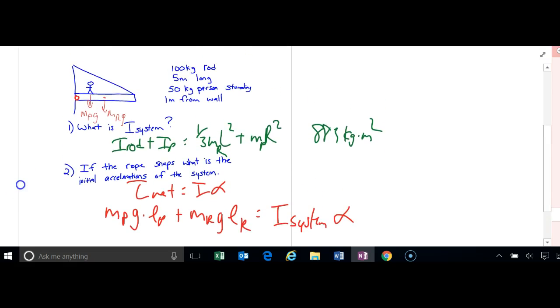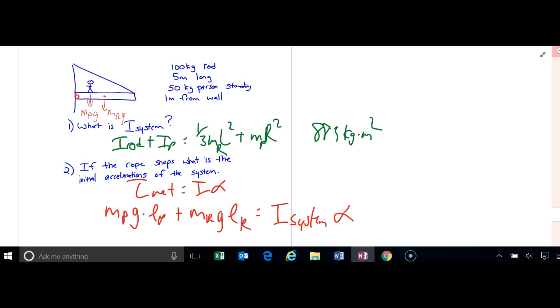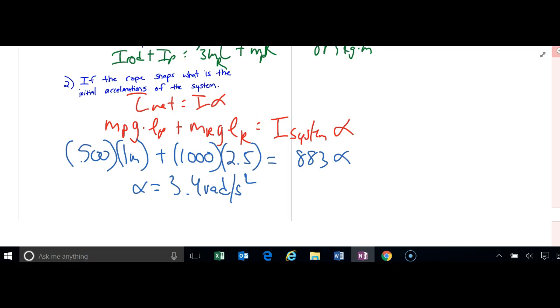Now, we should be able to solve the lever arm. It tells me that the person is only one meter from the wall, so their lever arm is one. Let me plug the numbers in here for you to see. Here's my numbers. Force of gravity of the person is Mg, so 500. They're one meter from the wall. Force of gravity of the rod, well, that's 1,000. And then the force of the gravity of the rod acts at the center of the rod, so 2.5. I, we just found, so I can find alpha.